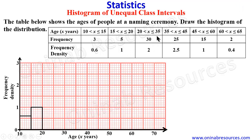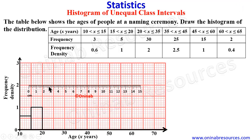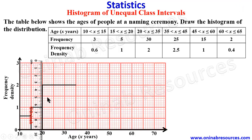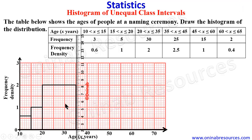The third class interval has a width of 15, so it will spread from 20 to 35. The height is 2, which is the frequency density. We place our ruler and draw the line, then bring the sides down to make the bar. You can see it spans from 20 to 35 with a height of 2.